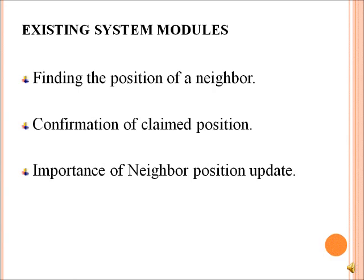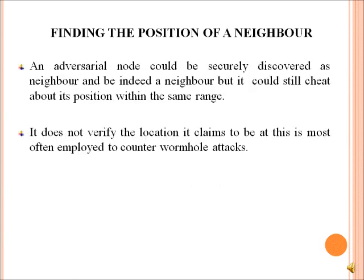Existing system modules include: Finding the Position of the Neighbor, Confirmation of Claim to Position, and Importance of Neighbor Position. Regarding finding the position of a neighbor: an adversary node could be securely discovered as a neighbor, but it could still lie about its position within the same range. It does not verify the location it claims to be at — this is most often employed to counter wormhole attacks.